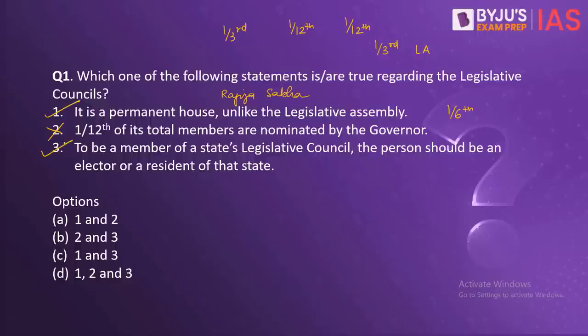About this statement — this is a correct statement — because according to the Representation of Peoples Act 1951, if a member has to be elected as a member of the state's legislative council, he or she should be a registered elector in one of the assembly seats of the state. Moreover, if the person has to be nominated by the governor, he or she should be a resident of that state. So the correct answer here is C.